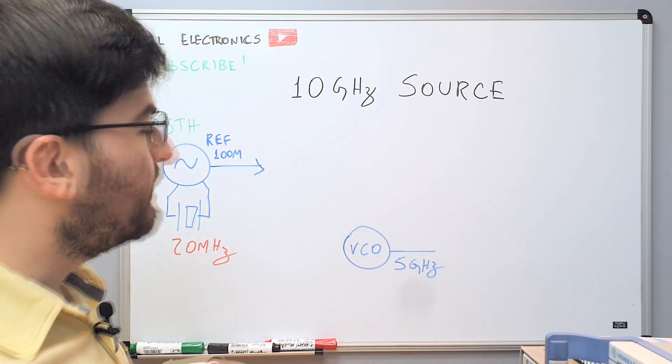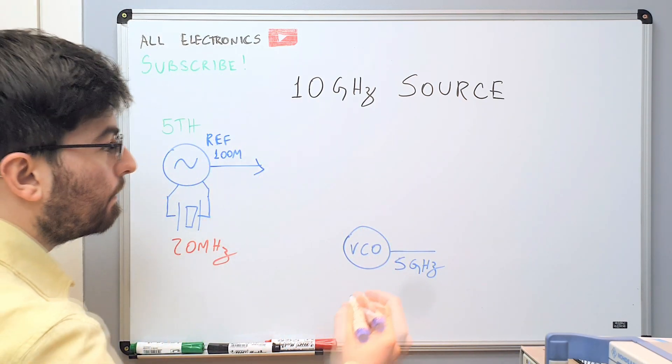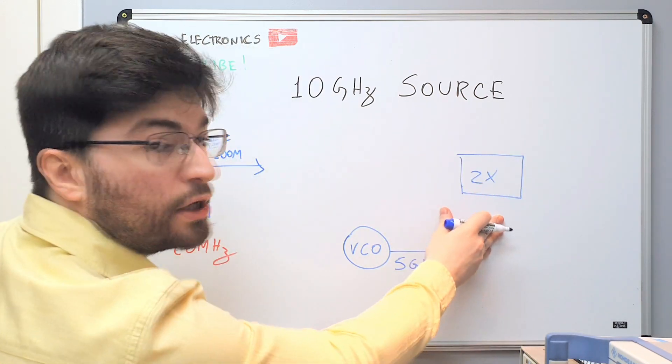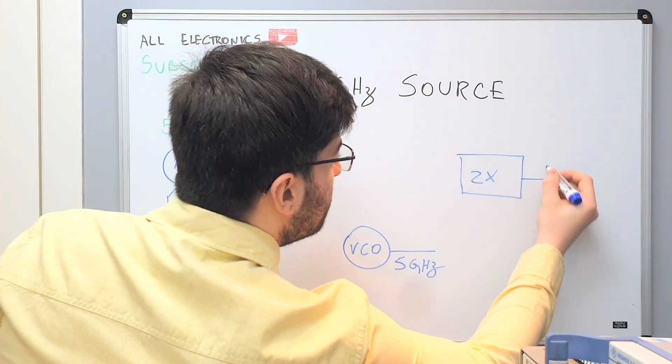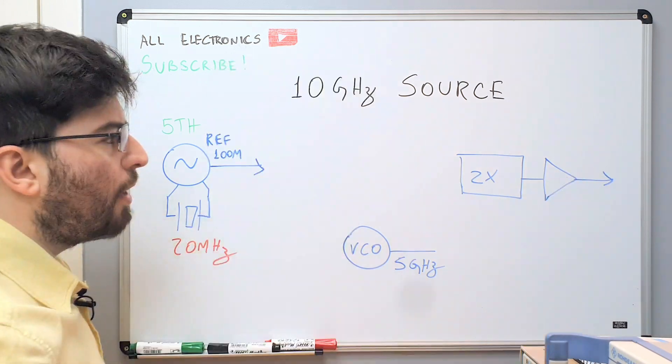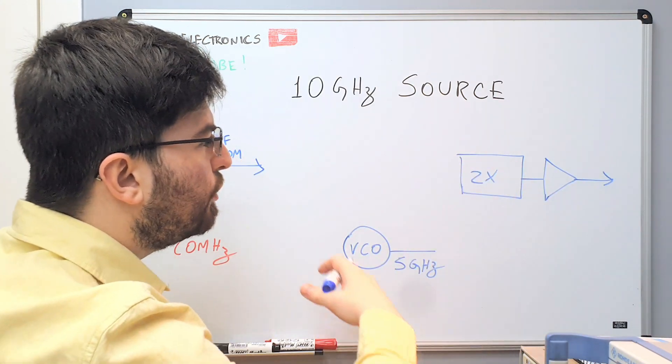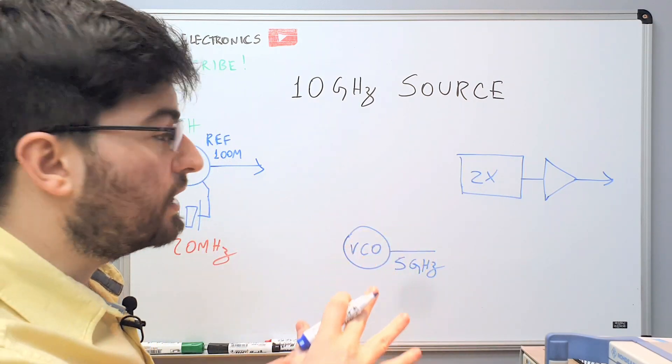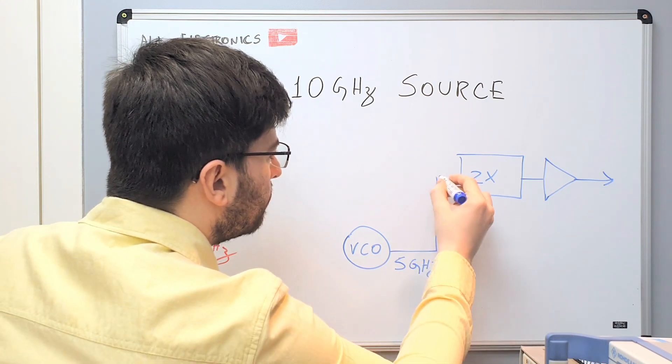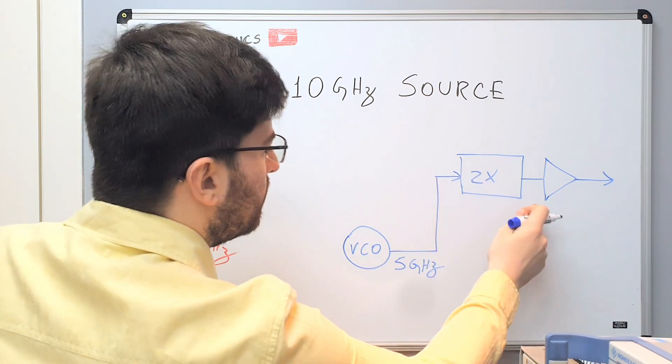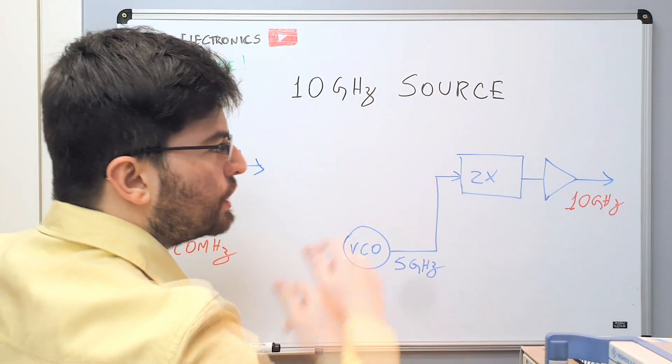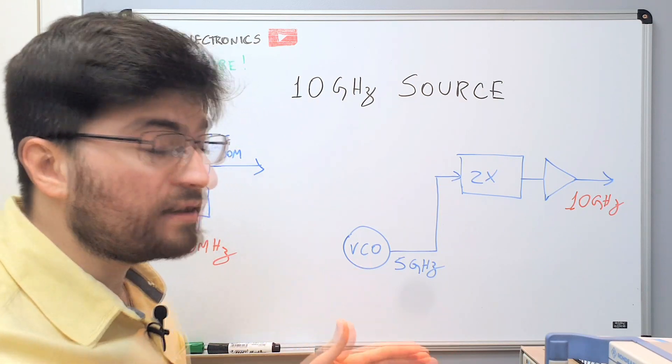As the output of the circuit needs to be 10 GHz, my idea is to have a frequency doubler here, using the topology we already studied here in the channel. And we need also a final amplifier here to generate the output signal. And probably we need some bandpass filtering and filtering of the harmonics, but I will not draw this here in the whiteboard. The 5 GHz signal will enter the frequency doubler to generate the 10 GHz output.